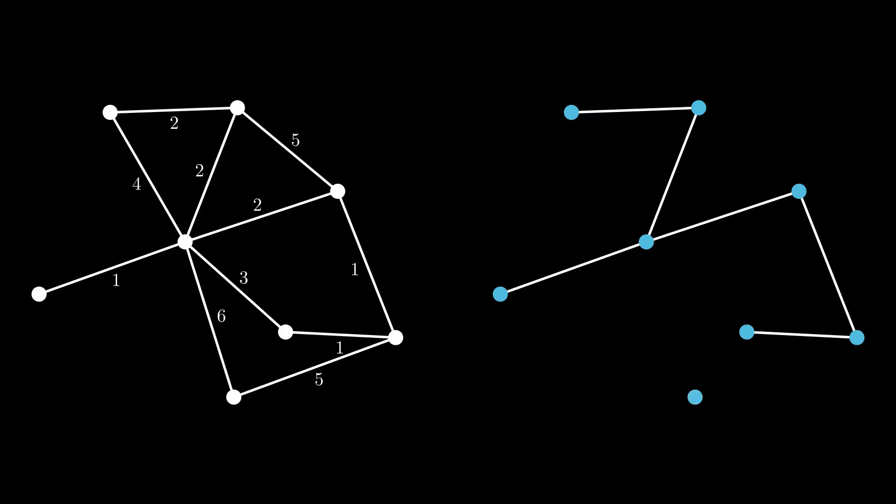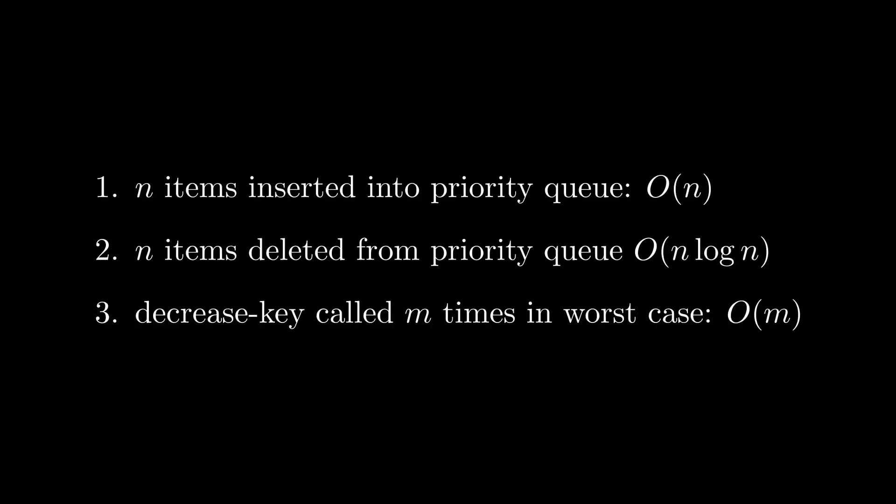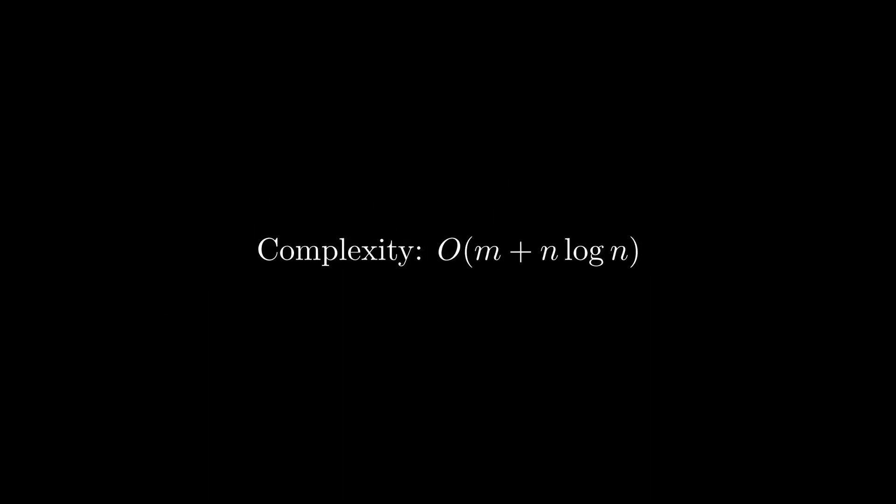I will leave it as an exercise for the viewer to prove the correctness of this algorithm. Calculating the complexity, we have that n items are inserted into the priority queue, n items are deleted from the priority queue, and decrease-key is called at most m times. If our priority queue implementation is based on a Fibonacci heap, the decrease-key and insertions are O(1), and the delete-mins are O(log n), meaning that the total complexity is O(n + n log n + m), which is equal to O(m + n log n).